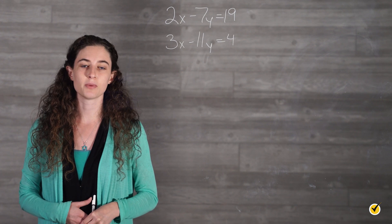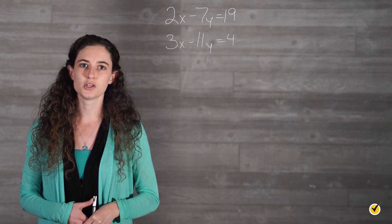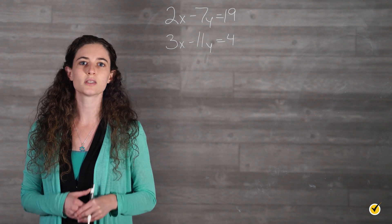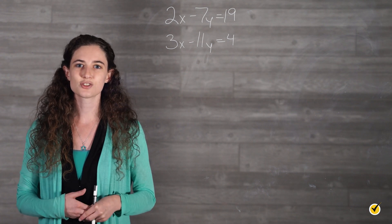If we multiply our first equation by 3 and our second equation by 2, we will get a 6x term in both equations that we can then cancel out. Let's try it.